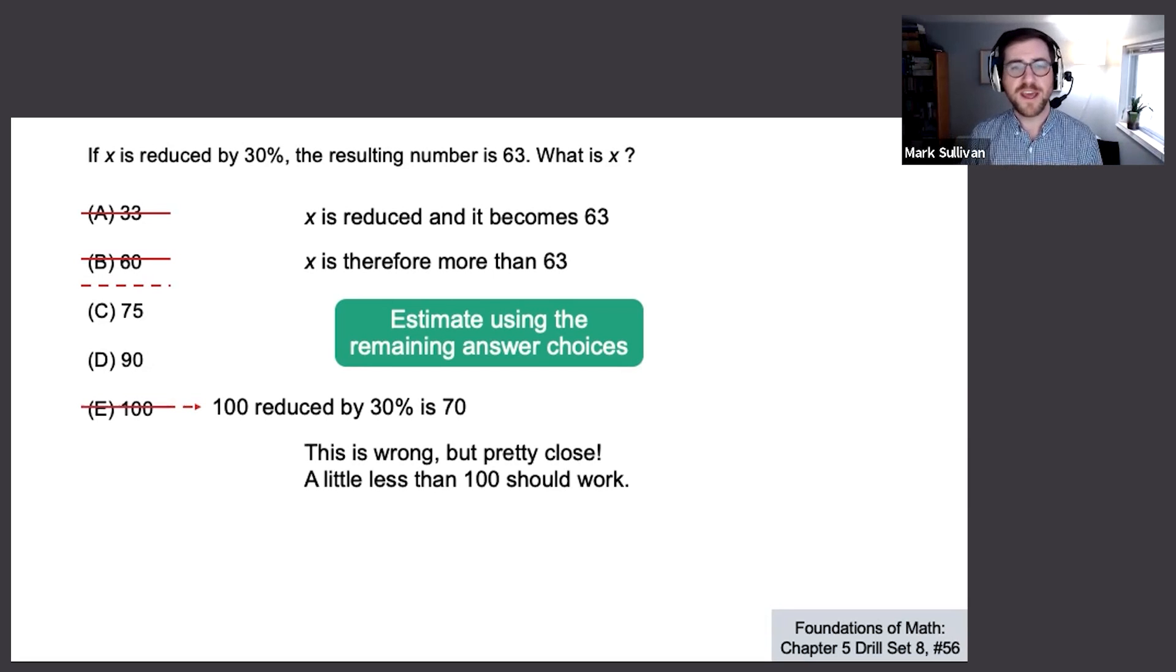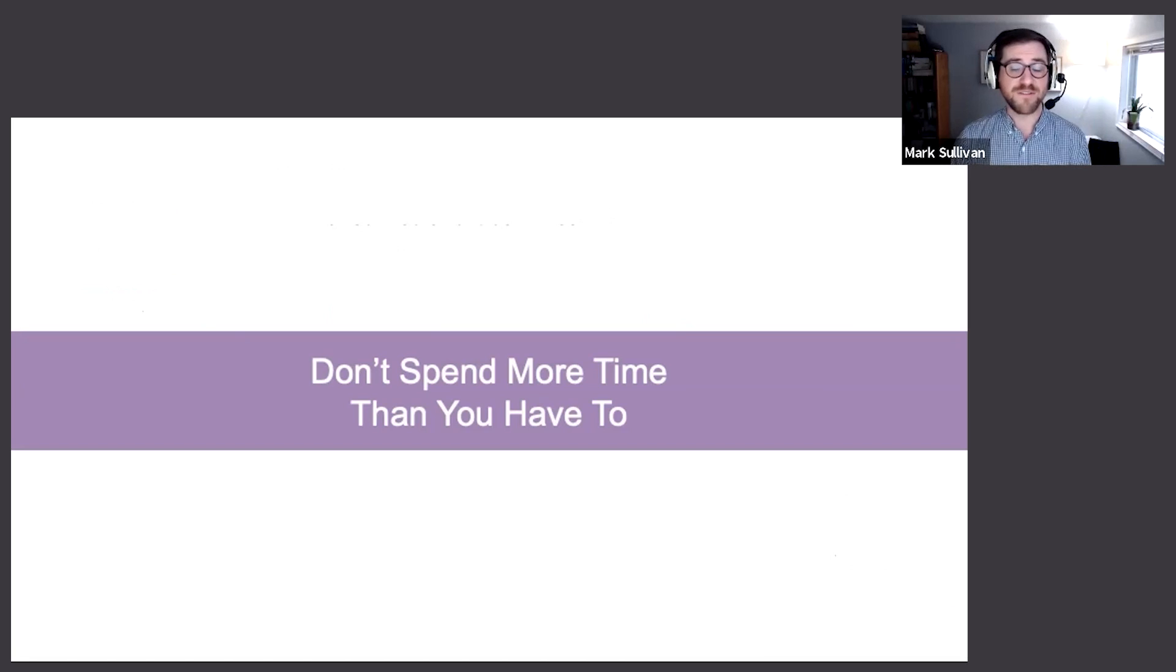It wasn't off by that much. At this point, I am completely confident that the answer is 90, and I don't care how good you are at algebra - that was easier than setting up and solving the corresponding algebraic equation. Estimation is often good enough, and we don't get style points for doing more work than we actually needed to.